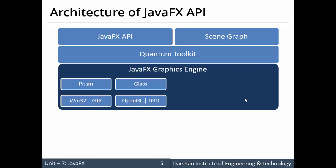JavaFX also contains the Glass Windowing Toolkit (GWT), which provides services to manage windows, timers, surfaces, and event queues. GWT connects JavaFX with the native operating system. OpenGL — the Open Graphics Library — is an example of a glass windowing toolkit, though any other graphics library can also be integrated.